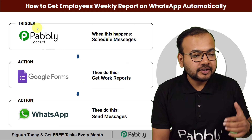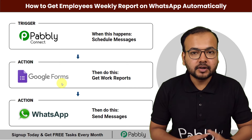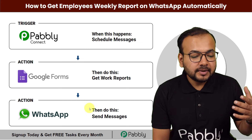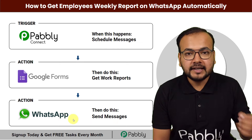Here you can see this will be the flow of this automation. We are using the scheduler feature of Pabbly Connect in the trigger of the workflow. With the help of this, you can schedule the WhatsApp messages that you are going to get. You have created a Google form for your employees by which you are collecting the work reports. As you get the work reports, according to the schedule, the message will be delivered to your WhatsApp automatically on any given day of the week with the work report summary. This is going to happen automatically using Pabbly Connect, which is an automation tool, without any coding.